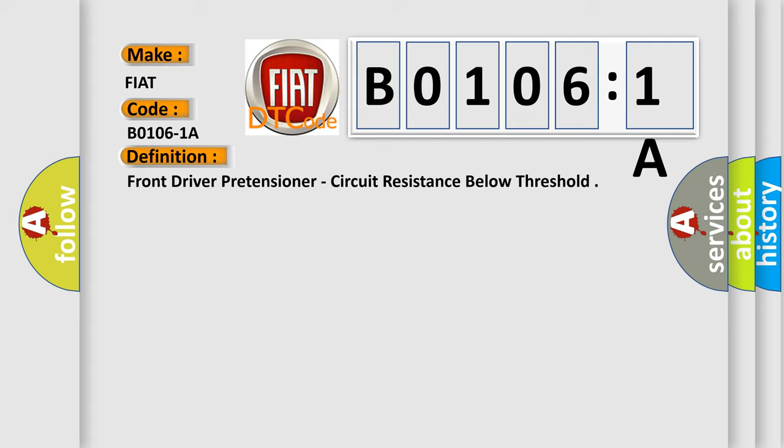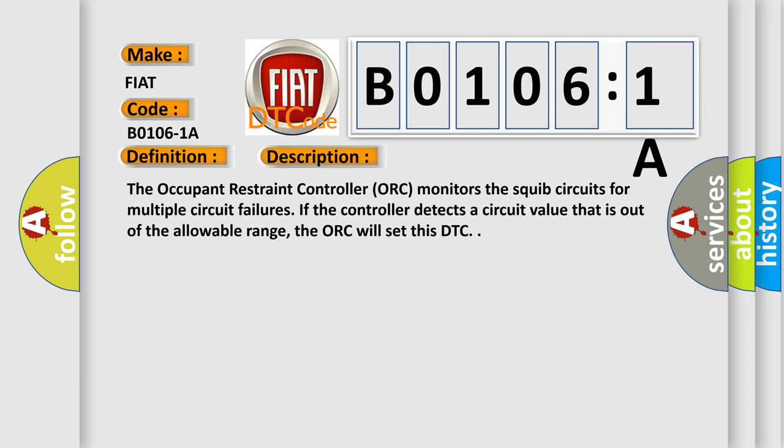And now this is a short description of this DTC code. The occupant restraint controller ORC monitors the squib circuits for multiple circuit failures. If the controller detects a circuit value that is out of the allowable range, the ORC will set this DTC.